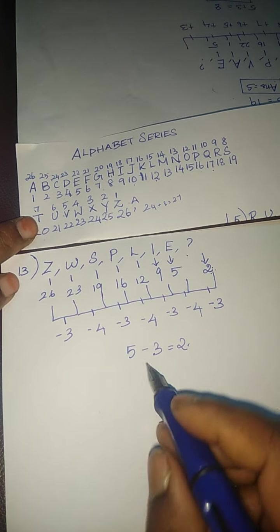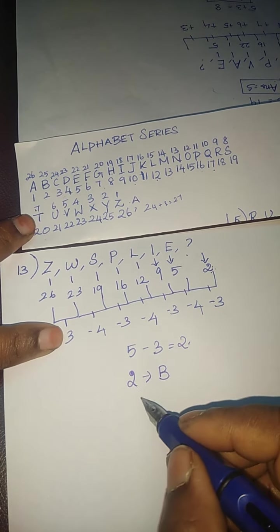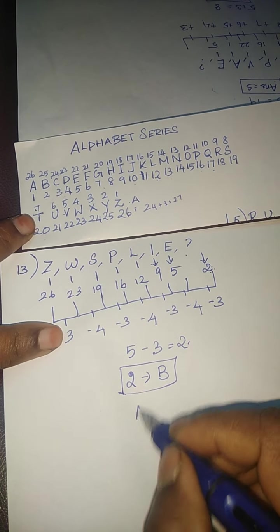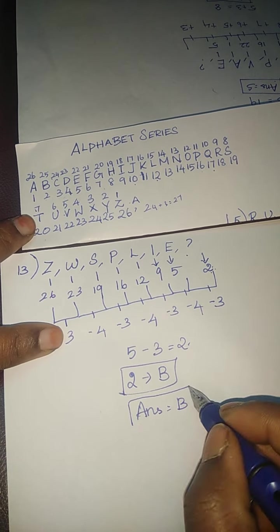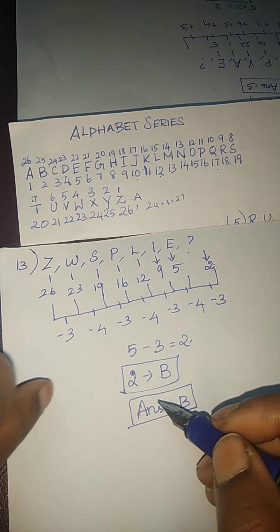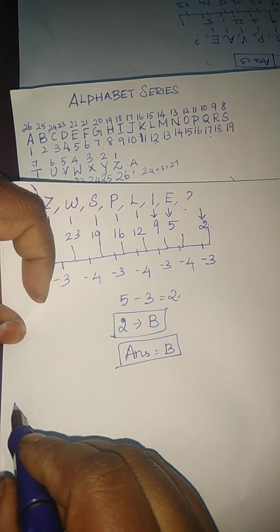So, number 2 denotes B in alphabet series. Hence the answer is B. Then we are moving to 14th sum.